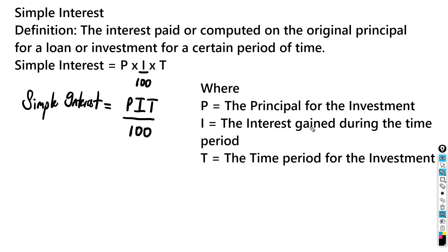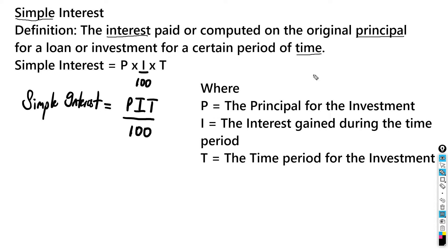Today we're going to be looking at simple interest. The definition says: the interest paid or computed on the original principal for a loan or investment for a certain period of time. The three most important words in this definition are interest, principal, and time.